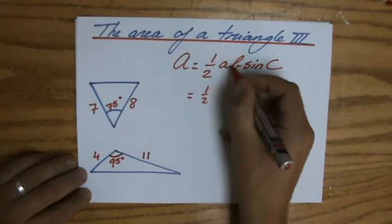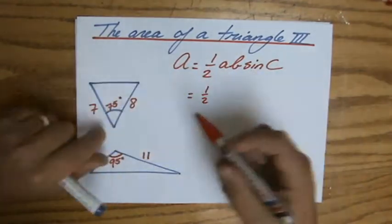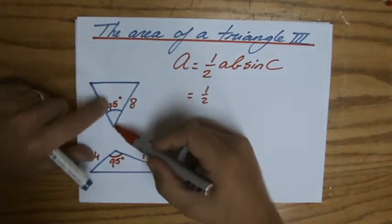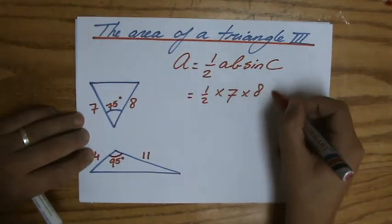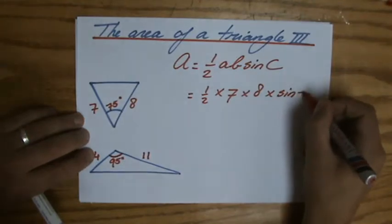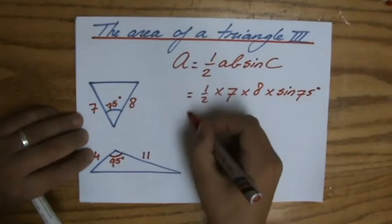So ABC, make sure the angle is between those sides. AB, indeed. So I can say half times seven times eight times the sine of 75 degrees. You see that? I write it down.